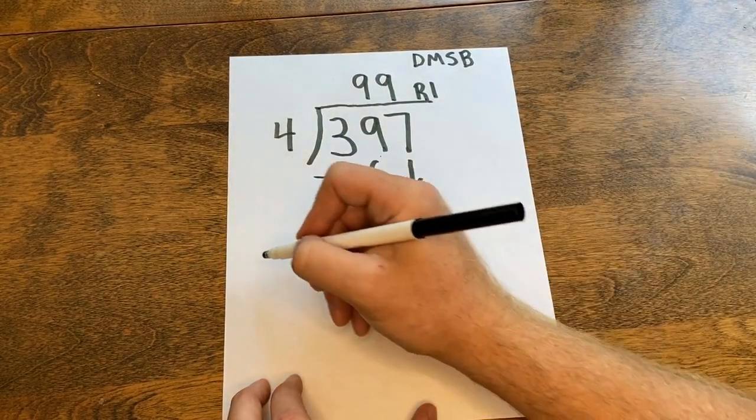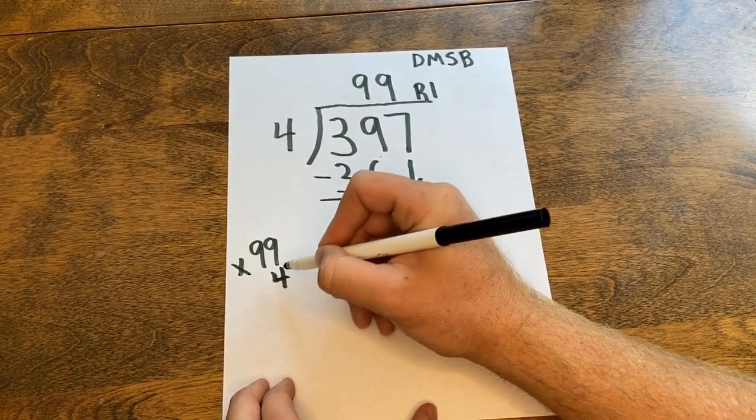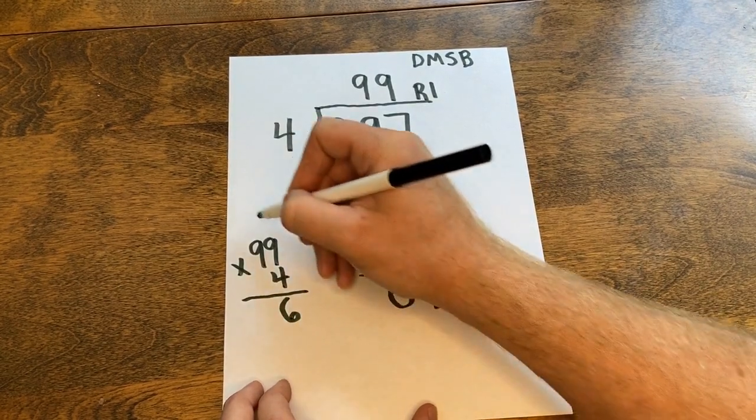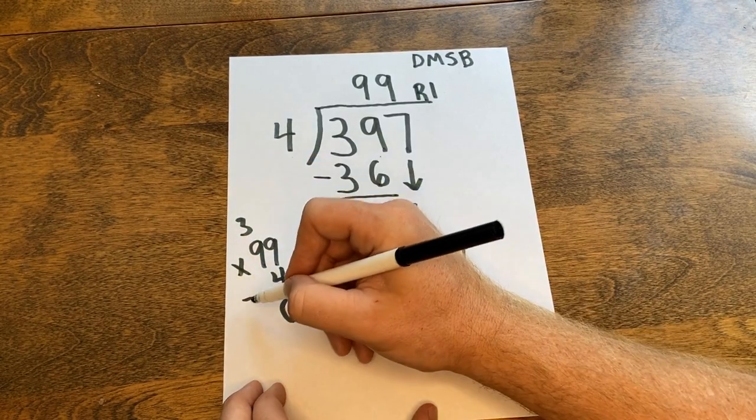Now I'm going to double check by stacking those numbers up and multiplying. 99 times 4. 4 times 9 is 36. I'll drop my 6, carry my 3. 4 times 9 is 36 again, plus 3 more is 39.